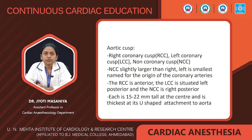There are three aortic cusps: the right coronary cusp, the left coronary cusp, and the non-coronary cusp. The non-coronary cusp is slightly larger than the right, and the left coronary cusp is the smallest, named for the origin of the coronary arteries. The right coronary cusp is located anteriorly, the left coronary cusp is situated left posterior, and the non-coronary cusp is right posterior. Each cusp is 15 to 20 mm tall at the center and is thickest at its U-shaped attachment.